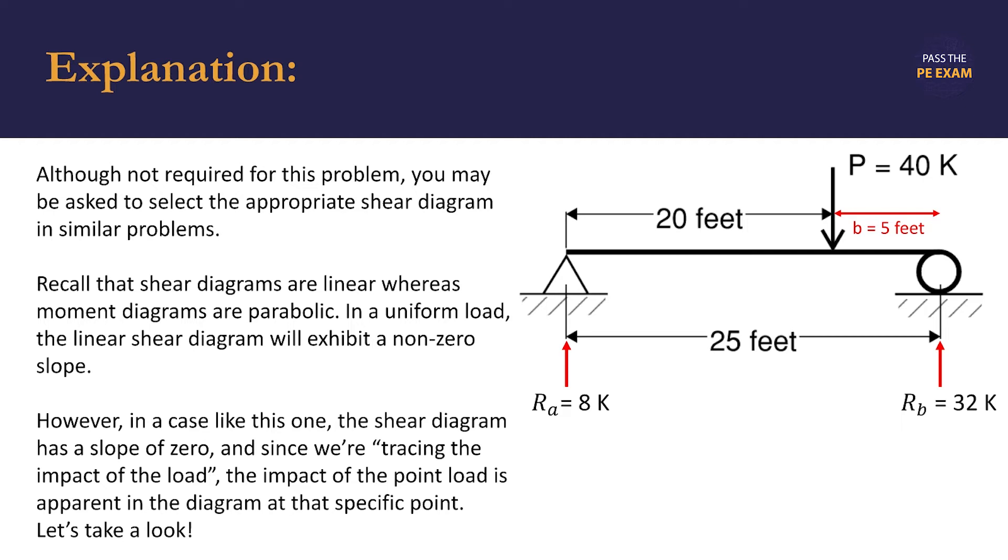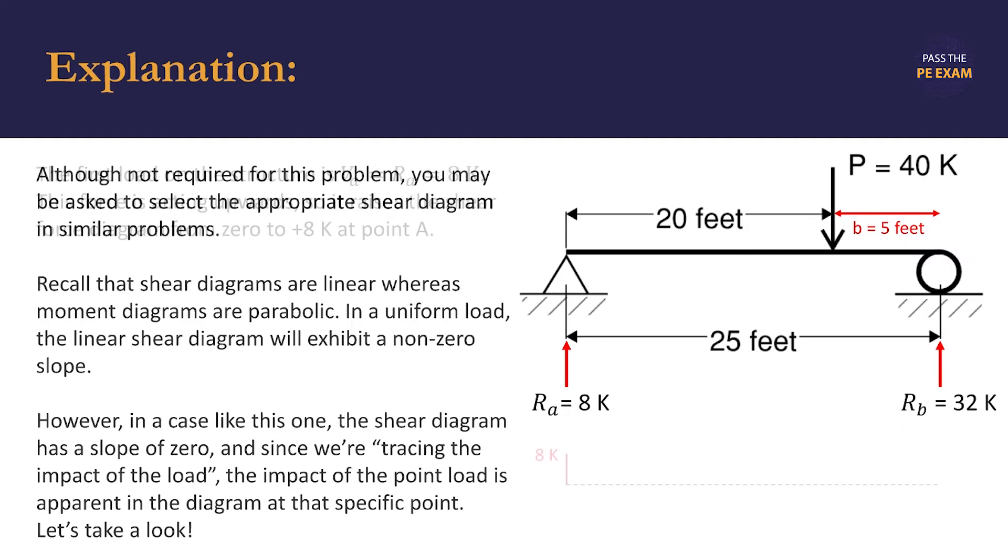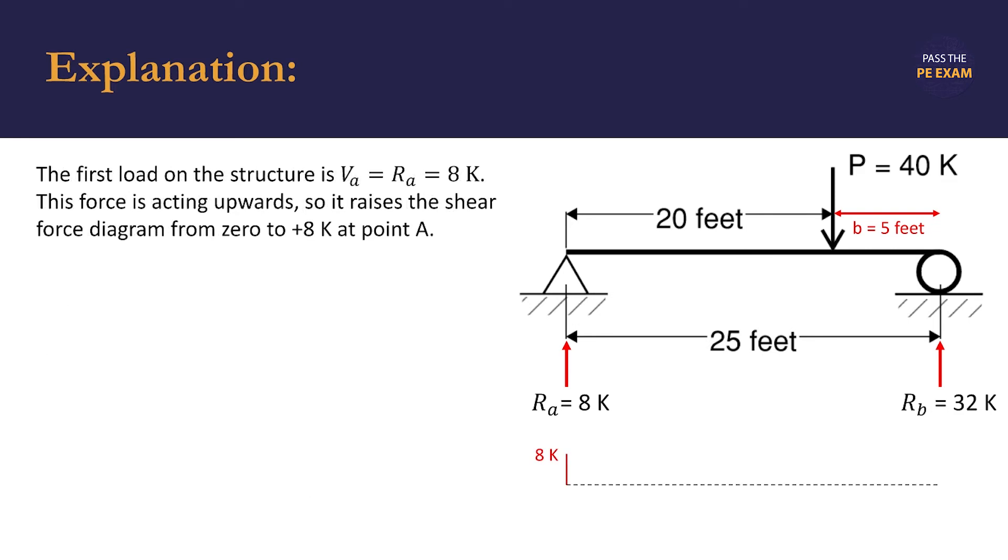Let's draw the shear diagram directly below the force diagram, which will show up here on the right. This makes it easy to correlate between the three points of force. The first load on the structure is at point A. This is our shear force A, V_A, which is 8 kips acting upwards, raising the shear force diagram from zero to positive 8 kips. We draw a vertical line representing this.